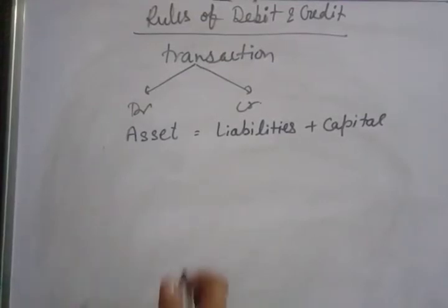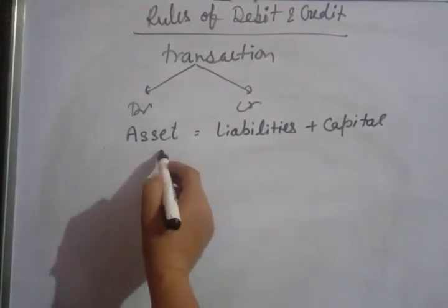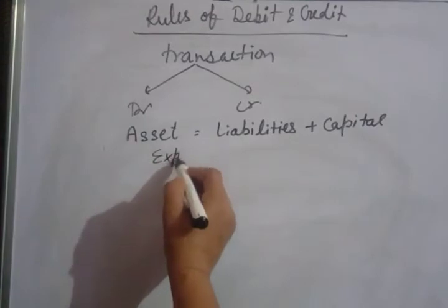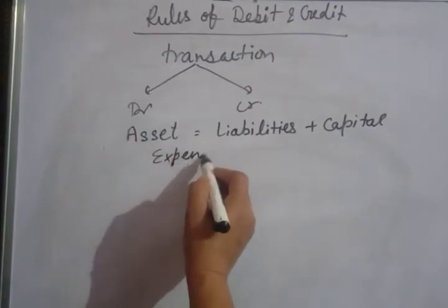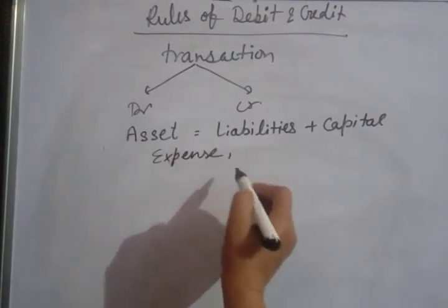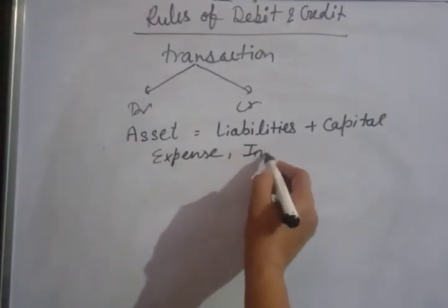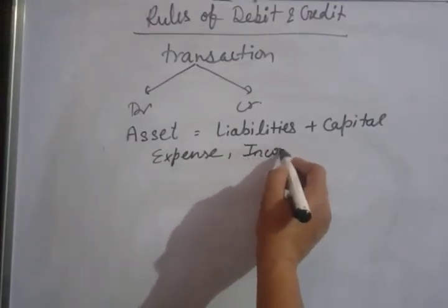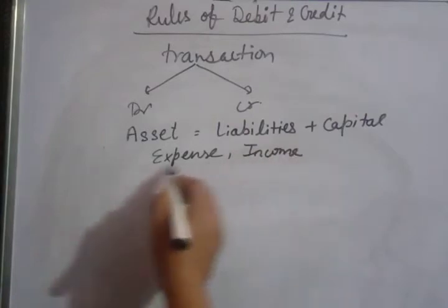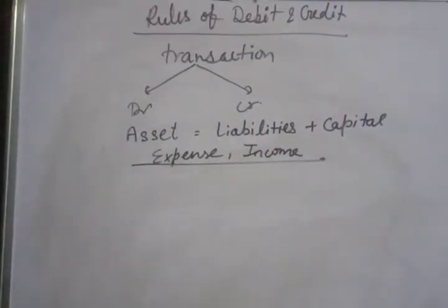Transactions can be related to expenses, or related to income. So we have 5 things in total. And there are 2 aspects — debit and credit.